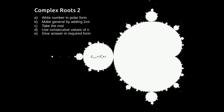And then finally you've got to give the answer in the required form. If you're lucky the required form will be polar form, which is how the answers come out at this point. If you're less fortunate you're going to have to convert them from polar form into rectangular form.